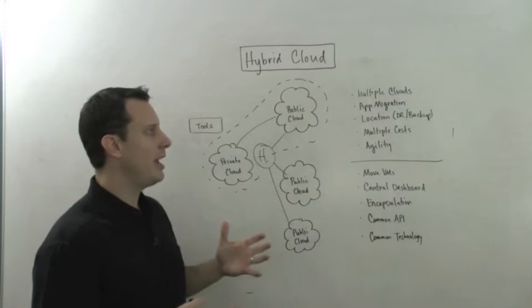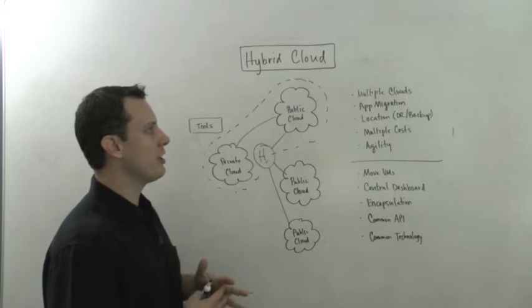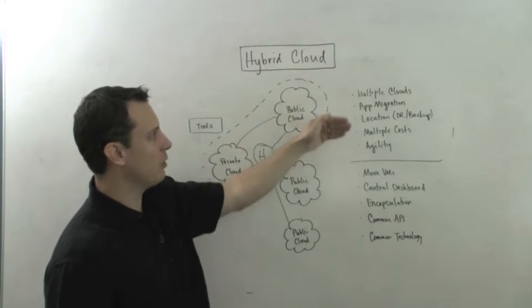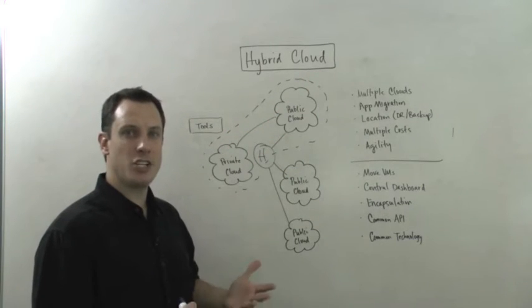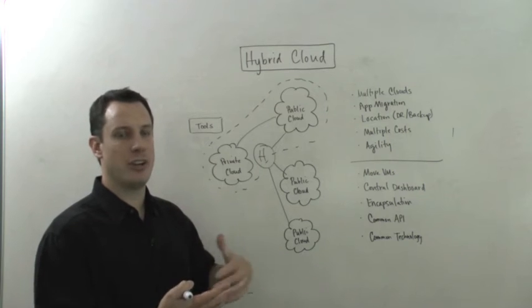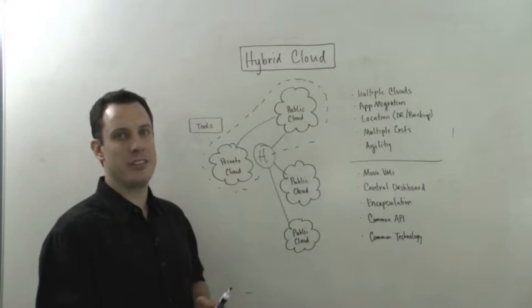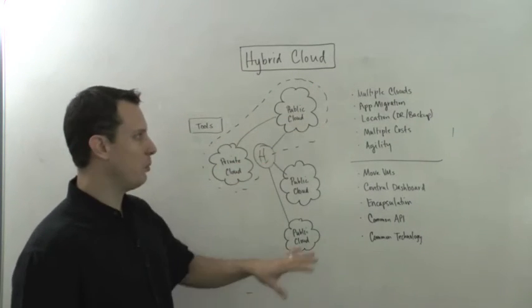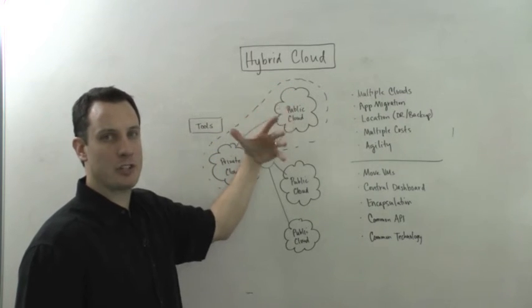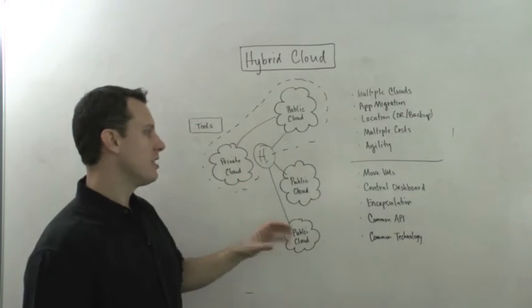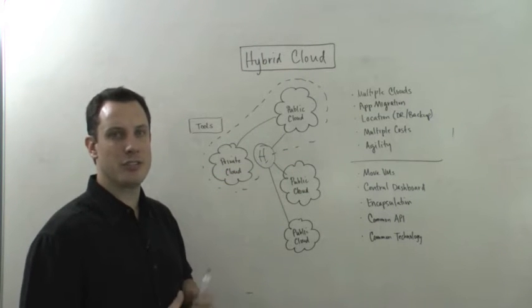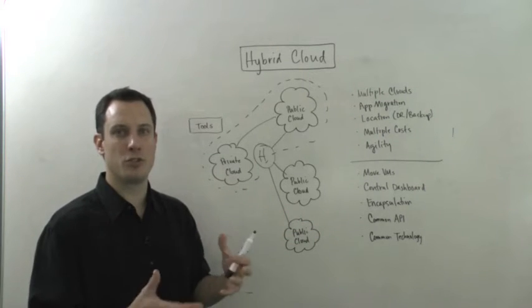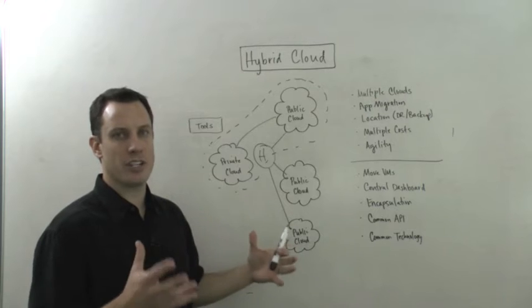They're giving customers flexibility. And if we think about why people, why companies are starting to want to use hybrid clouds, are evolving hybrid clouds, it really kind of falls into these categories. They want multiple clouds for risk mitigation. They want multiple clouds for geographic location. The laws in Europe are different than the laws in the United States versus the laws in Asia. They want to be able to migrate applications.